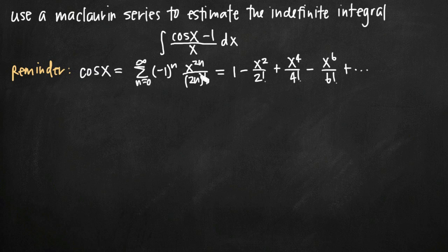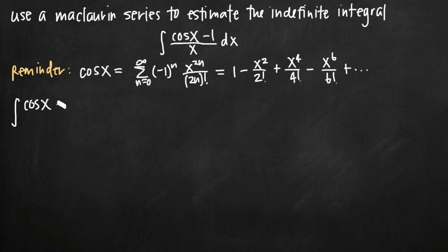I have lots of videos about how to generate a Maclaurin series, so if you're unclear on how to do that, you can always watch one of those videos. For this video, we're going to assume that you already have the formula and just start from this point. The easiest way to do this is to replace the cosine of x value in our original integral with the first several terms of this series, then add on the negative 1 and the 1 over x value.